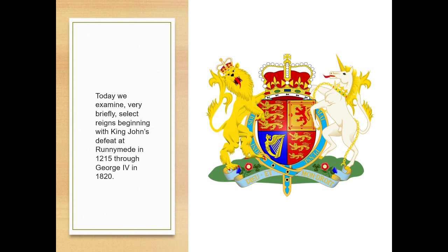Does anybody know the golden rule — not the one in the Bible, but the other golden rule? The golden rule in the Bible is love your neighbor as yourself; the other golden rule is those who have the gold make the rules. Now what we're looking at is the barons versus the king. The king has complete authority in the kingdom — it's a monarchy, an autocracy, the rule of one.